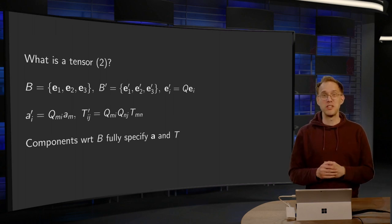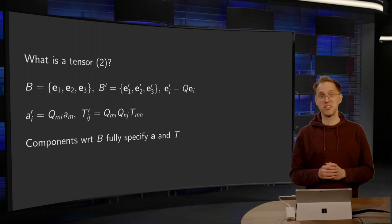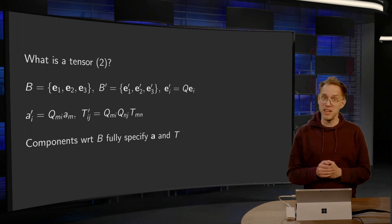We have seen though that the numbers in a vector or matrix depend on the basis we choose. However, physics obviously does not care about the basis we have chosen. So there could be a problem here. How do we prevent that our physics depends on the choice of basis?